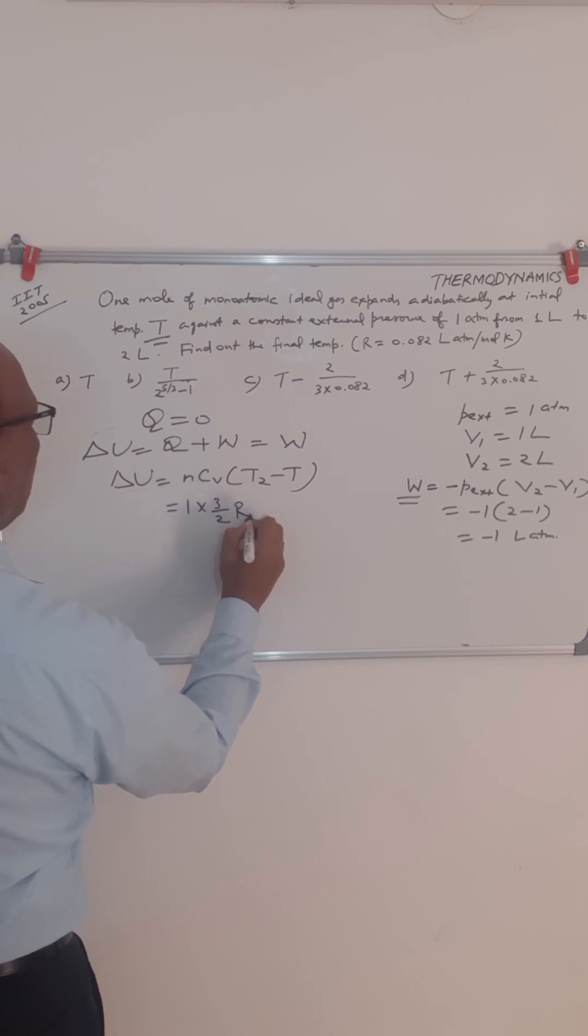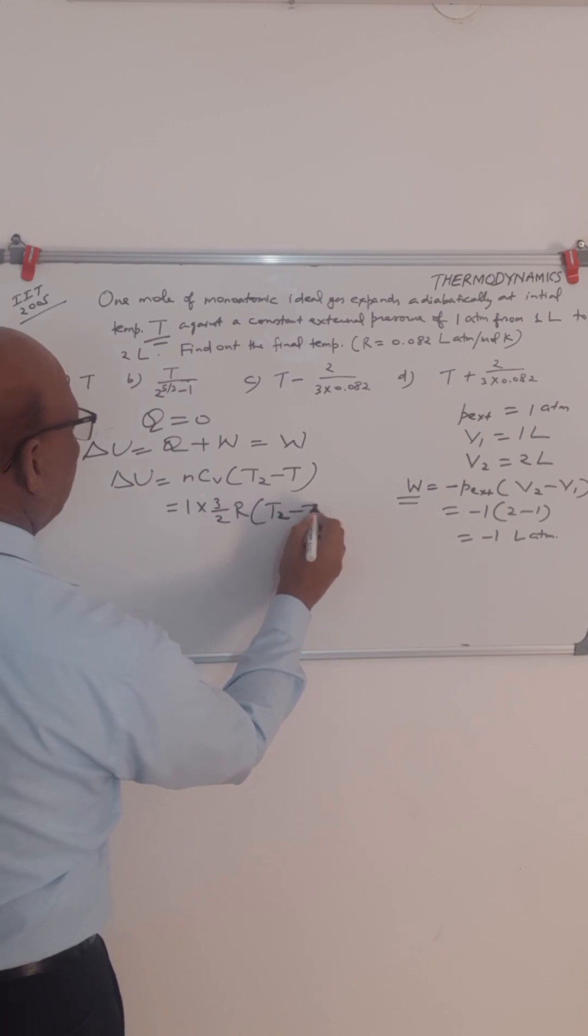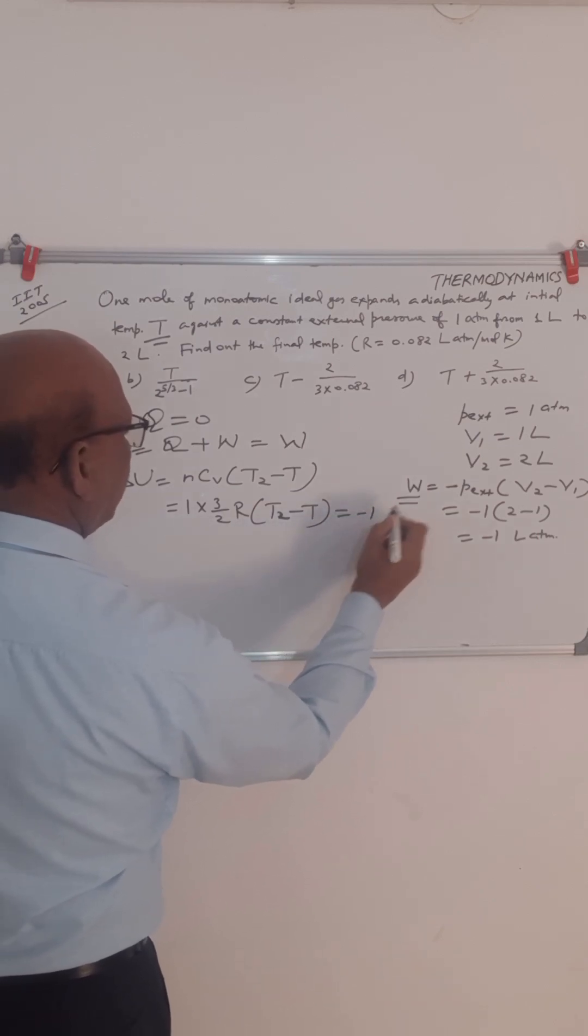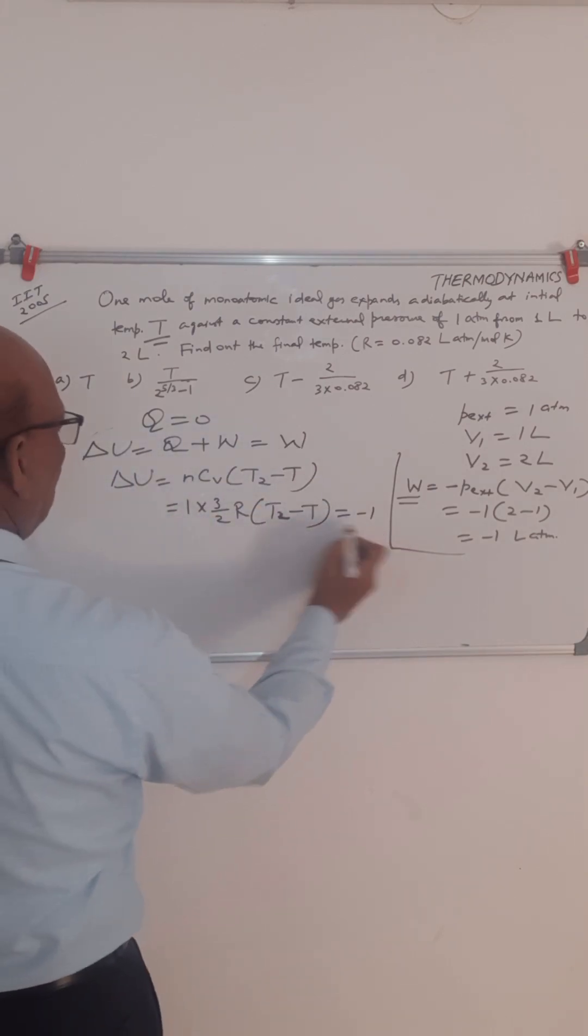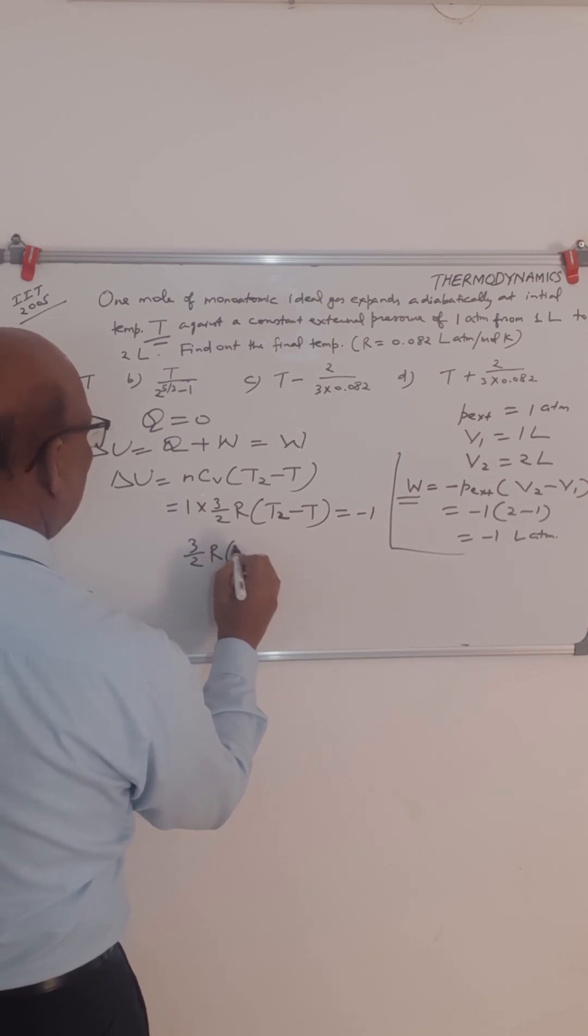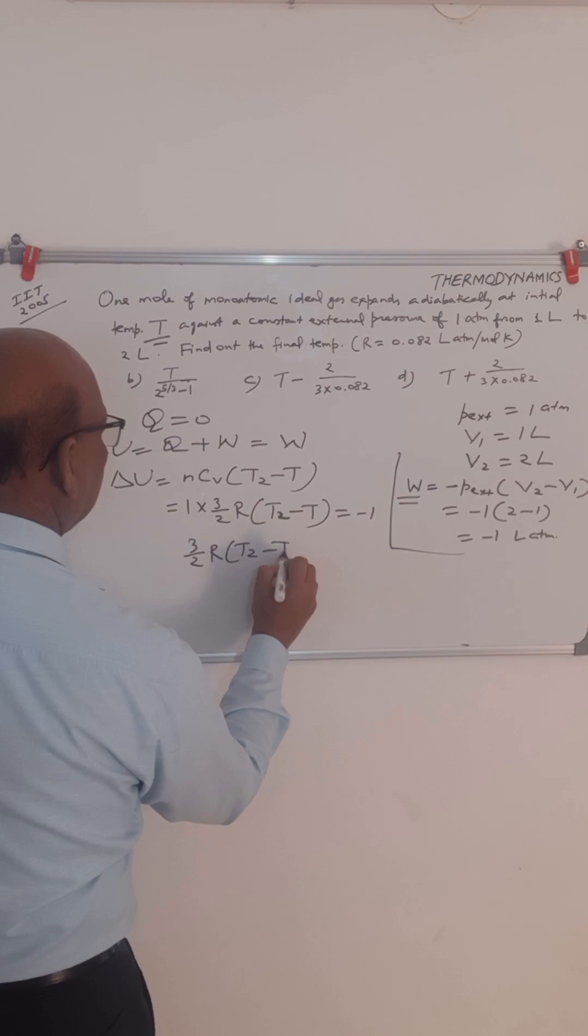So 3 by 2 R into T2 minus T, or this is equated to minus 1 because work done is minus 1. So delta U equals minus 1. Delta U equals W means this will be equal to minus 1. So we have equation 3 by 2 R into T2 minus T equals minus 1.